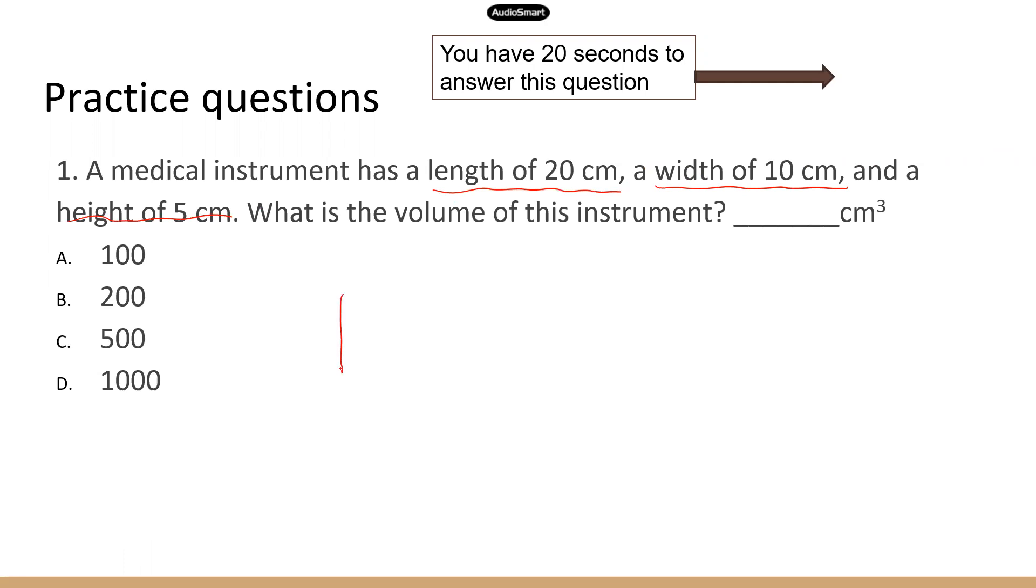So if you know something has this kind of shape, the volume is going to be the length times the width times the height. So you just need to multiply all three numbers, 20 times 10 times 5, and that will give you 1000. And the unit is going to be centimeter cubed. Okay, correct answer is D. All right, next question.